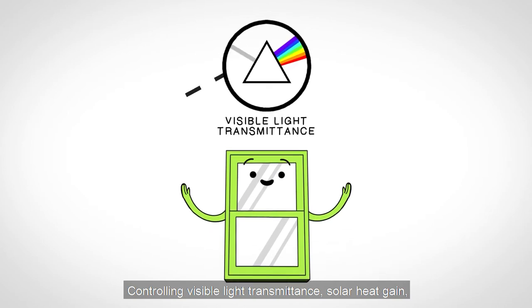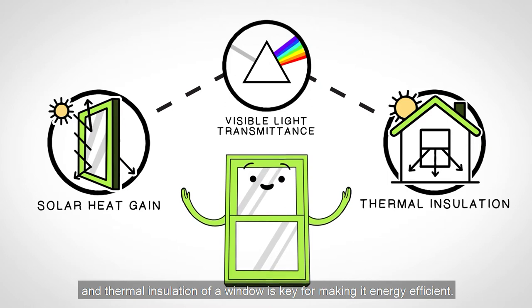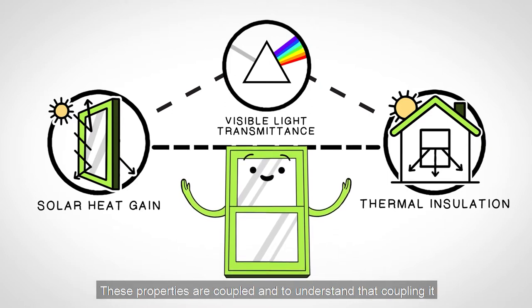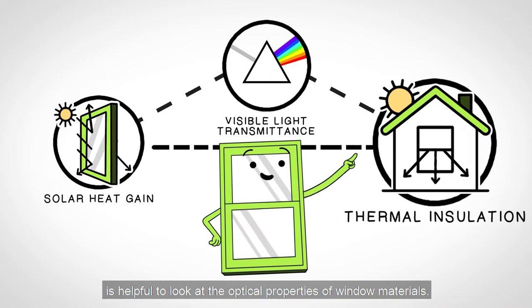Controlling visible light transmittance, solar heat gain, and thermal insulation of a window is key for making it energy efficient. These properties are coupled, and to understand that coupling, it is helpful to look at the optical properties of window materials.